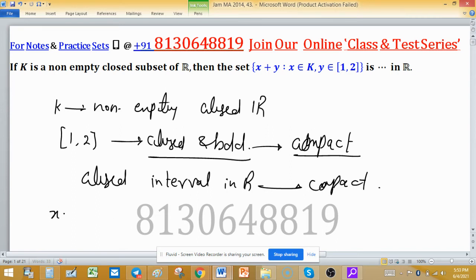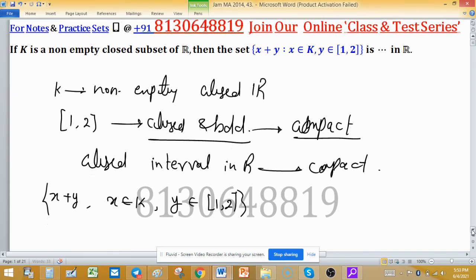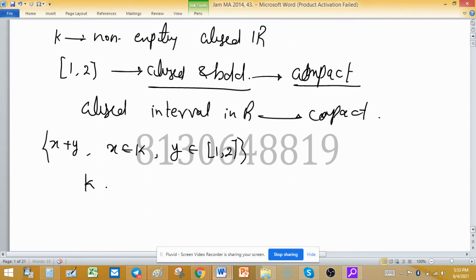Now this set X plus Y when X is coming from K and Y is coming from [1,2] - this is nothing but sum of two sets. I can write in another way: K plus [1,2]. As K is closed and this set is closed.